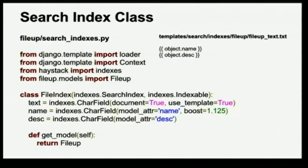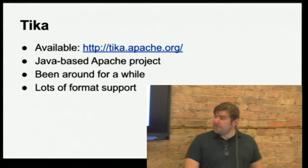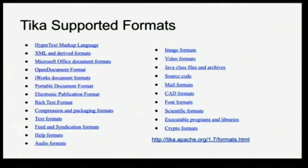Now let's talk about getting text out of documents. There are two ways. The first is a project called Tika — a Java-based app hosted by the Apache project. It's been around for a while and supports a lot of different formats, including Word documents and many others. It's a pretty big and capable project, though being Java-based sometimes doesn't play well with Python.